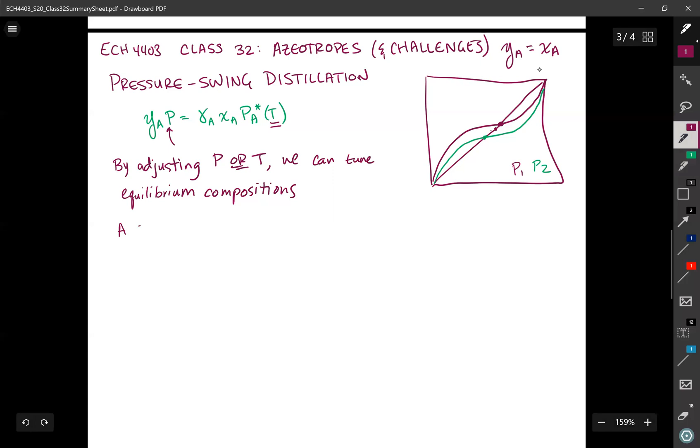So a system is a good candidate for pressure swing distillation if the azeotrope changes composition upon a change in pressure.